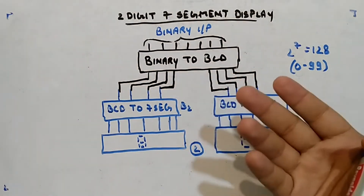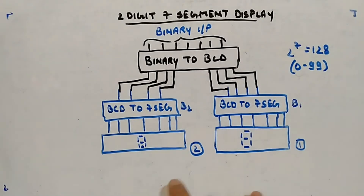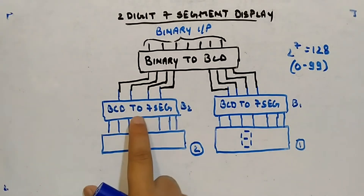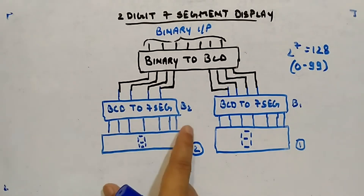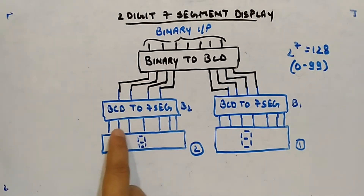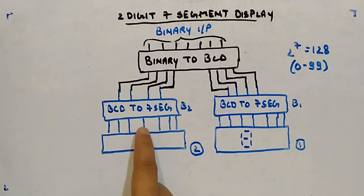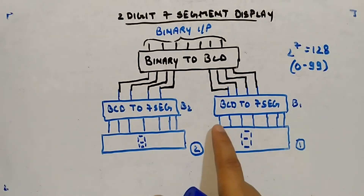This is my thought on how it should be working. I've taken two such blocks — B1 (first) and B2 (second). This second BCD to seven segment circuit converts BCD to outputs A2, B2, C2, D2, E2, F2, G2, and similarly A1, B1, C1, D1, E1, F1, G1 for the first display.